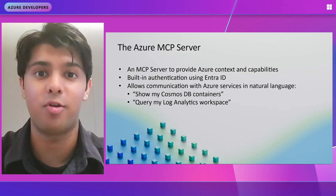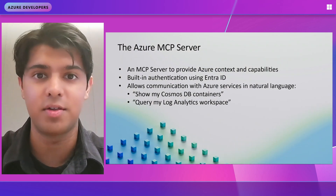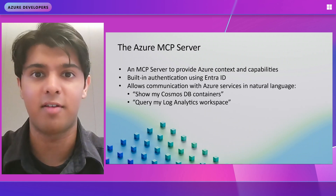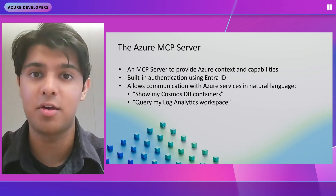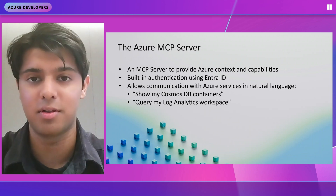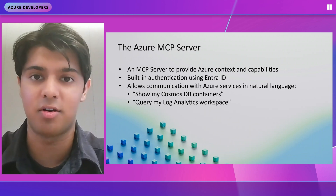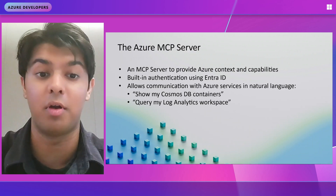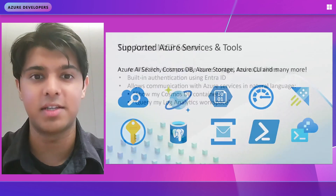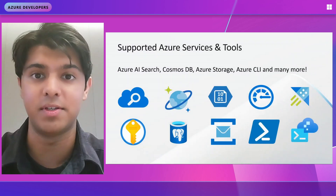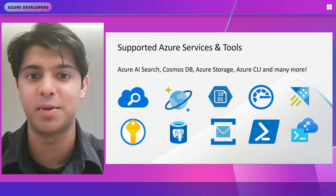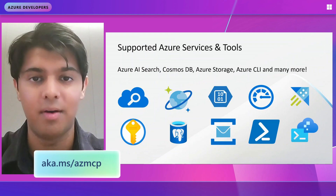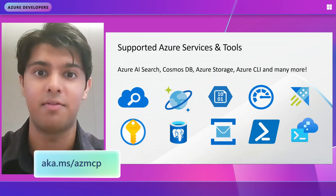To better help agents on Azure, we built an Azure MCP server, which provides your agents with Azure context and capabilities. We use authentication using Entra ID for security, and it allows for communication with Azure services in natural language. For example, an agent using the Azure MCP server can answer questions like 'show me my Cosmos DB containers' or 'query my Log Analytics workspace.' There are many services and tools supported, such as Azure AI Search, Cosmos DB, Azure Storage, the Azure CLI, and many more. You can check it out at aka.ms/azmcp.